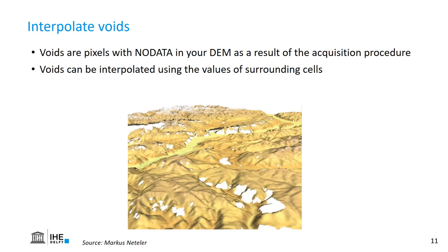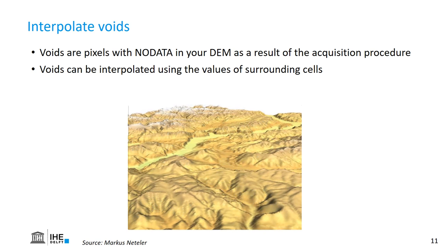The next step is to interpolate the voids. Voids are no data pixels in your DEM, which can be a result of the acquisition procedure. Some procedures don't handle well areas that are covered by snow or that are in the shade of other mountains. Therefore we need to use the surrounding information to interpolate these areas. We can never create the real data, but we can make it possible to continue with the dataset after interpolation of the voids.